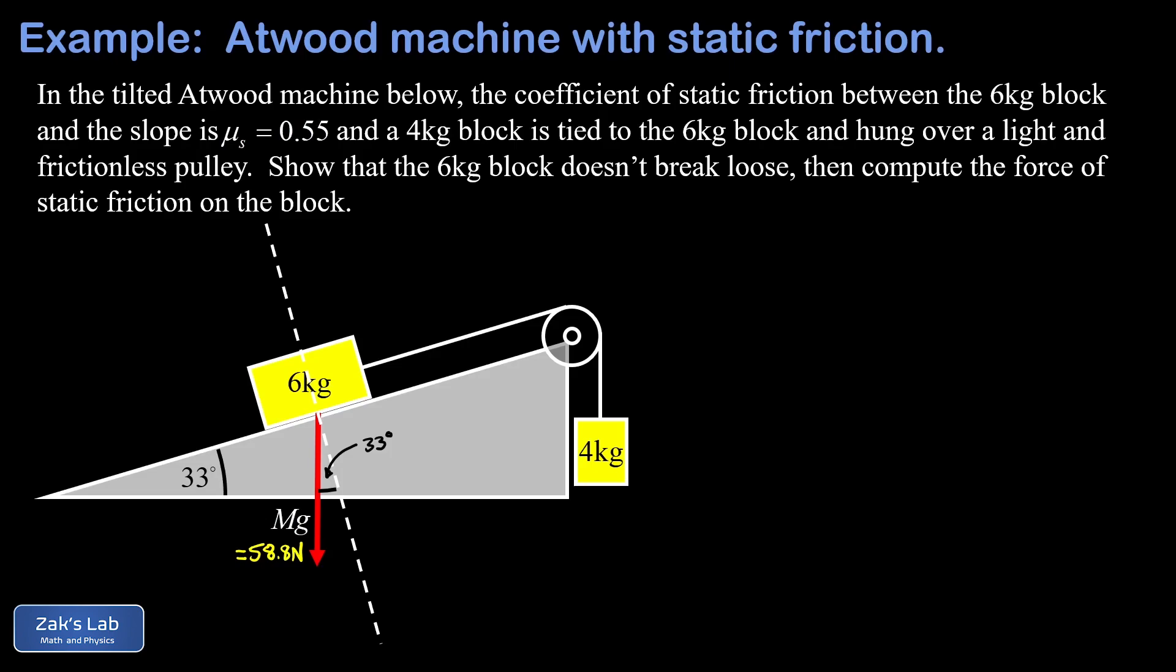Now the next thing we're going to do is decompose the force of gravity into components that are perpendicular and parallel to the ramp. So there's the force decomposition just using the cosine to get the adjacent side to the labeled angle and the sine to get the opposite side. Now it's a little awkward to have that parallel component all the way down below the diagram. So we're going to move that and attach it to the actual six kilogram mass that it acts on.